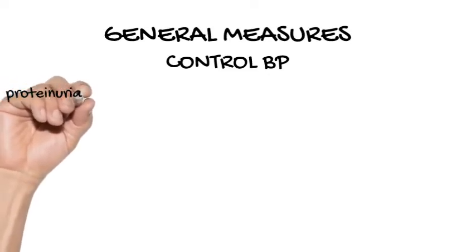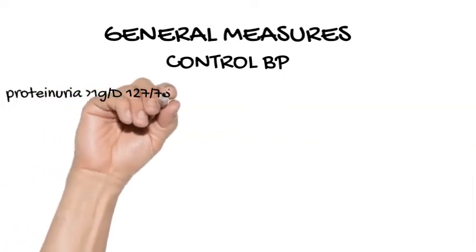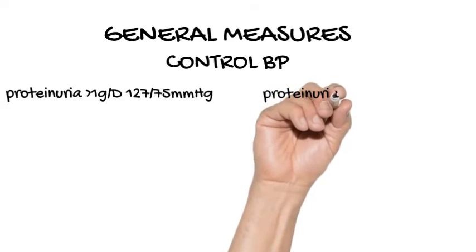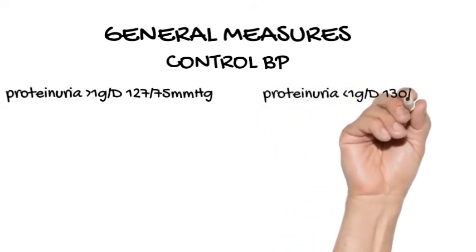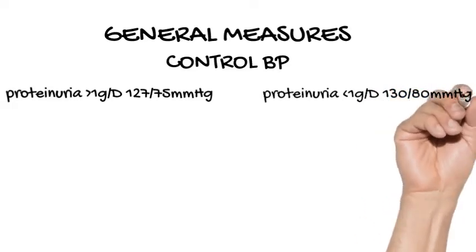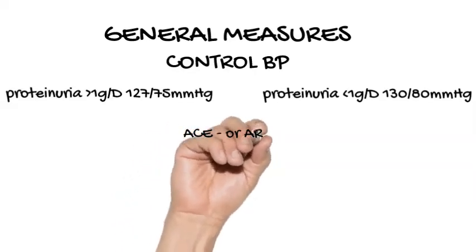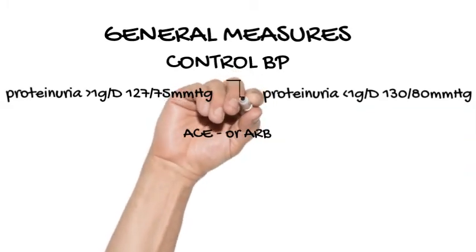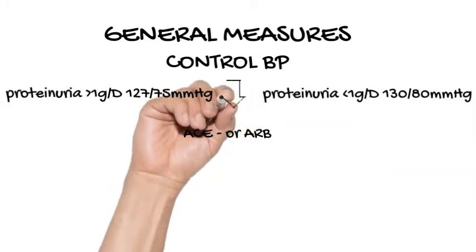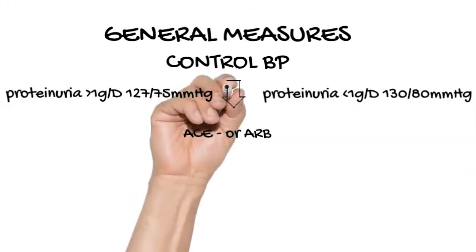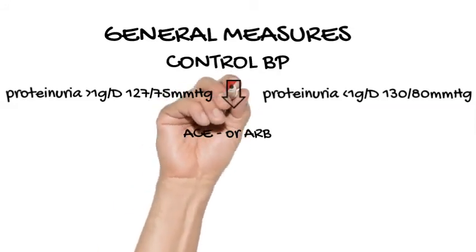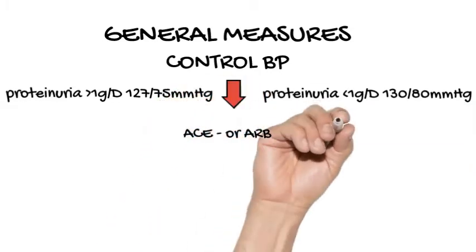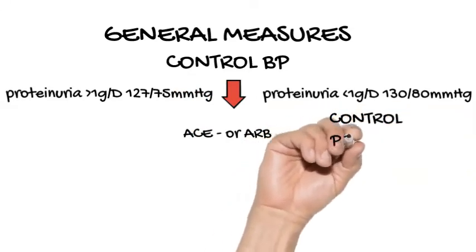Blood pressure management. Control of blood pressure has been demonstrated to retard the progression of renal failure in virtually all forms of renal disease. Treatment of hypertension in patients with glomerulonephritis also reduces the risk for cardiovascular disease. A target blood pressure of less than 125/75 mmHg is recommended for patients with glomerulonephritis and proteinuria more than 1 gram per day. A target blood pressure of less than 130/80 mmHg is recommended for those with proteinuria less than 1 gram per day. Angiotensin-converting enzyme inhibitors are recommended as preferred treatment of hypertension in patients with glomerulonephritis, as they confer greater renal protection. Angiotensin receptor blockers can be used as an alternative to ACE inhibitors.